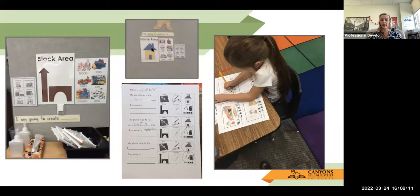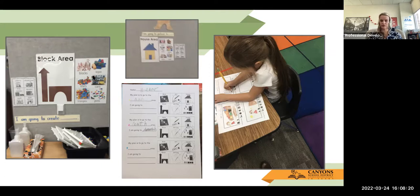Each area has one, and some teachers have been super creative with adding what they're going to do when they go there as an example, so students have that anchor to write in their journal. So if they're going to the block area, they can write they're going to create whatever they want using Legos or blocks. These are things that you actually have in that area with them.